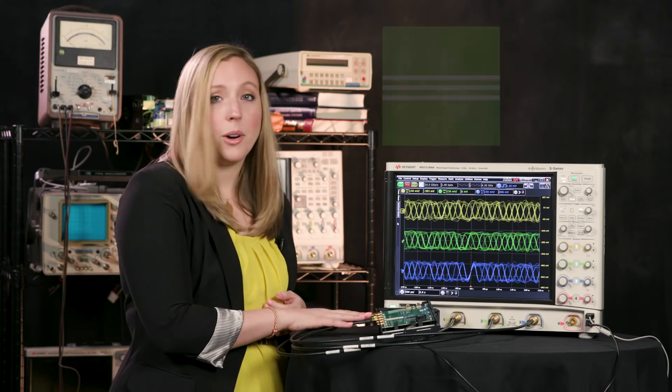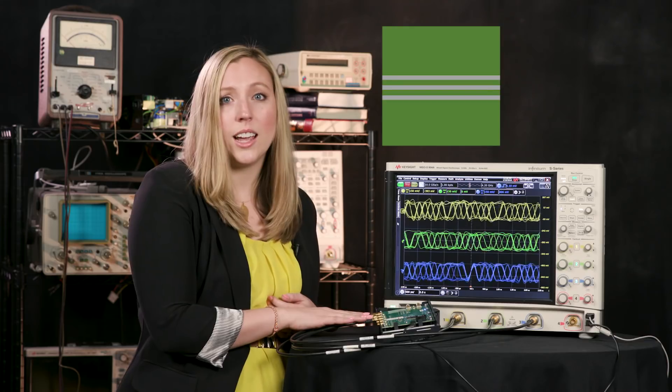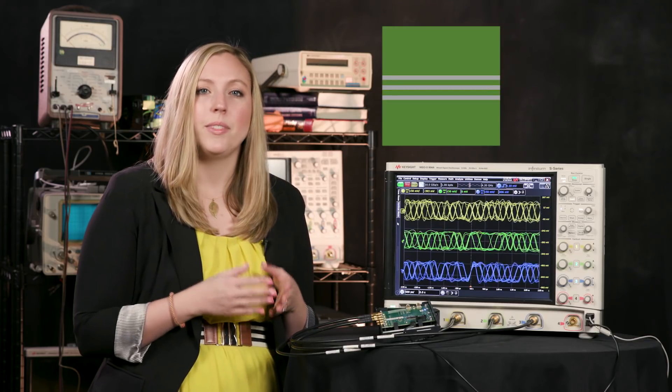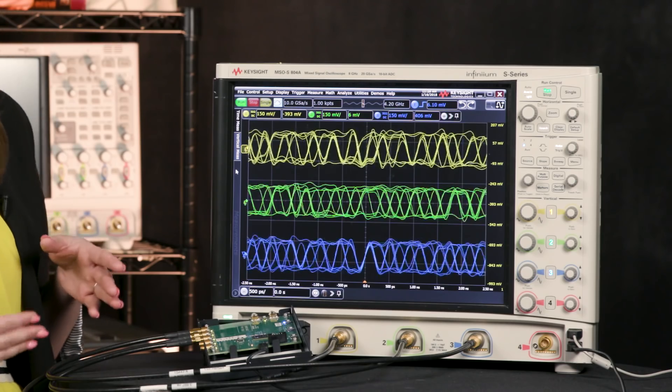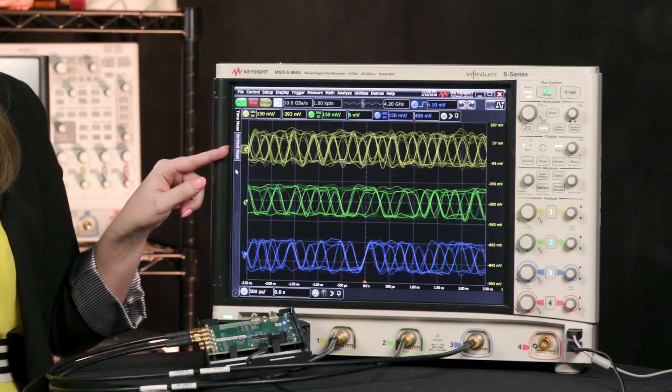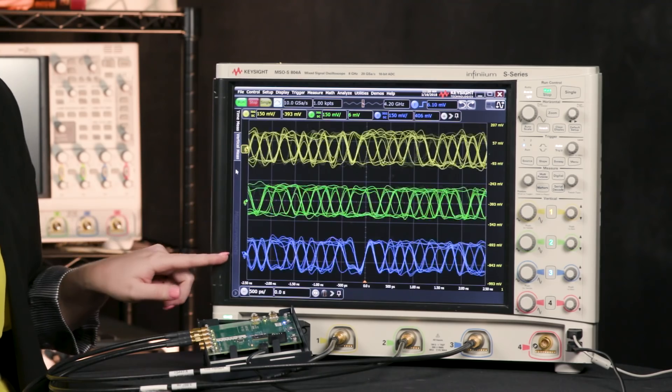The crosstalk app can analyze up to four signals at once. So if you have multiple traces close together, you can test them all. On my board, I have three serial data lines that are very close together, and I think the trace in the middle is at risk, with interference from the traces on either side of it. My middle trace is the victim signal, and the ones on the outside are called the aggressor signals. I've connected the victim to channel one, and the aggressors to channels two and three.